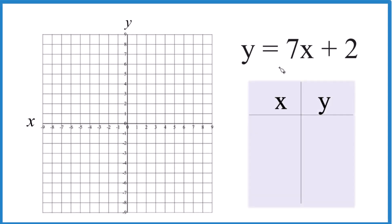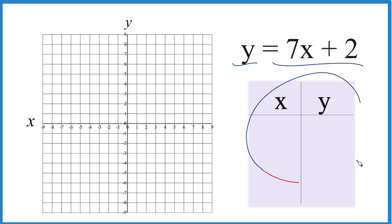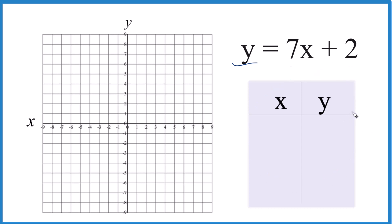So if you're asked to graph the linear equation y equals 7x plus 2, here's how you can do that. We'll use a table of values to do it. You could use slope-intercept form, and that would give you the same answer. If you need help with that, there's a link at the end of this video.